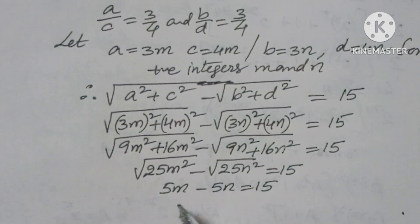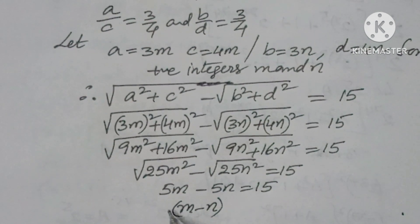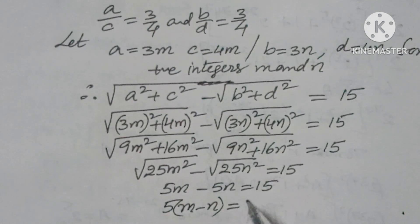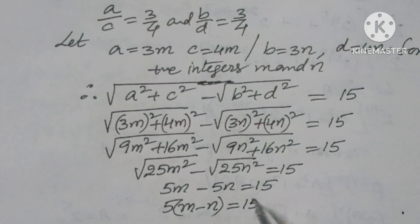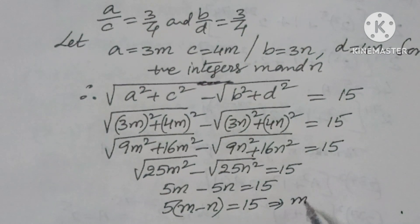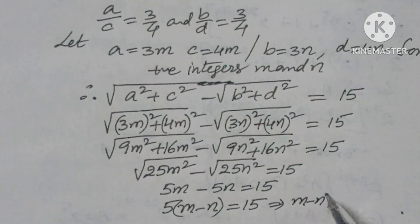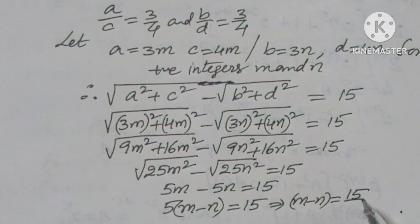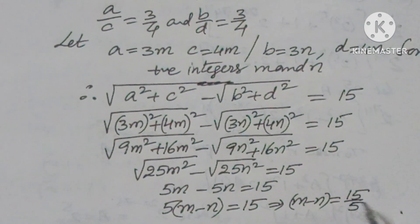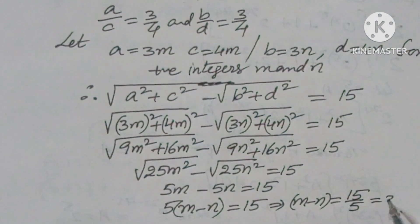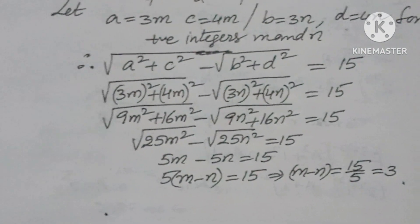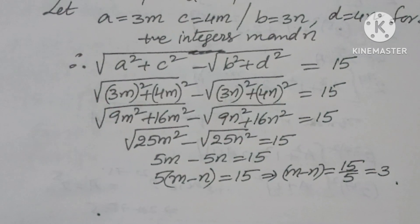Taking 5 common: 5(m − n) = 15, which implies m − n = 3.